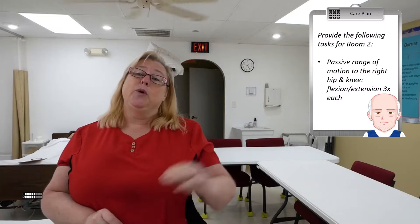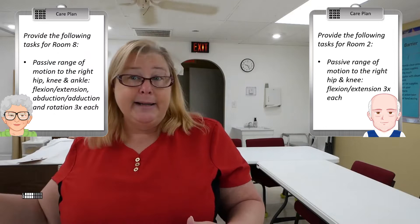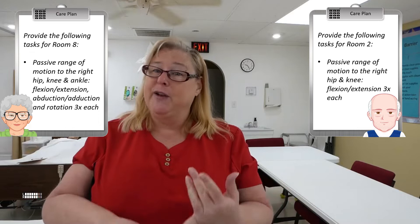Not all care plans are going to be the same. You might have a care plan in room two that tells you to do range of motion of the hip and knee, but only flexion extension. You might have a care plan in room eight that tells you to do range of motion of the hip, knee, and ankle, but that patient needs flexion extension, abduction, adduction, and rotation. So it's super important that you pay attention to that care plan. It will be different for everybody based on their own level of ability.